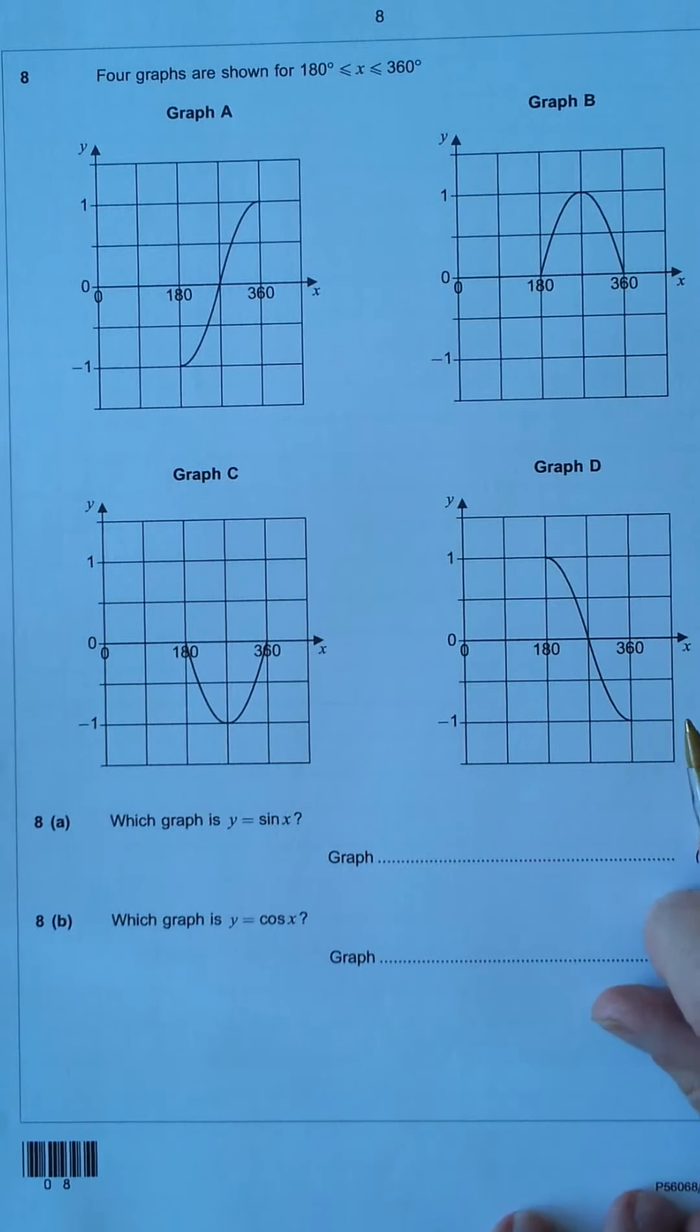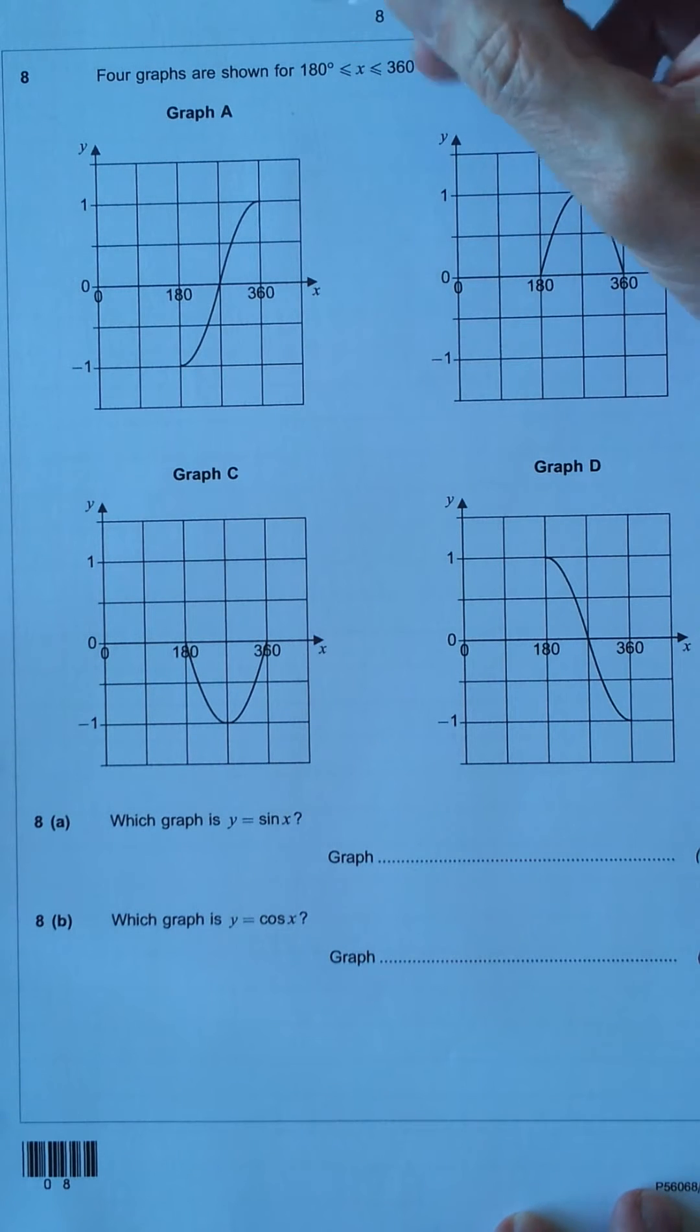Okay, this question here is about trig graphs, sine graph and cosine graph. We've got four graphs shown for 180 degrees, between 180 degrees and 360 degrees.